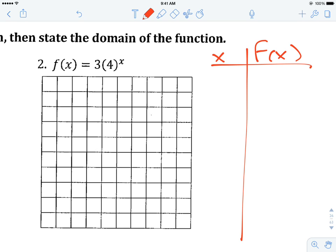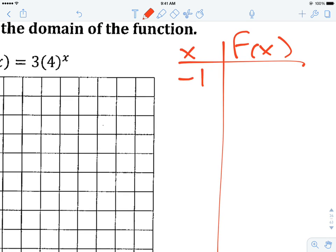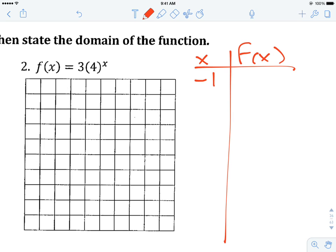So I'm going to let x be negative 1. And so by looking at the work involved in that, it would be 3 times 4 raised to the negative 1 power. That negative 1 tells 4 to be the reciprocal of that, which would be 1 fourth. So it would be 3 times 1 fourth to the first power, and so the output would be 3 fourths.